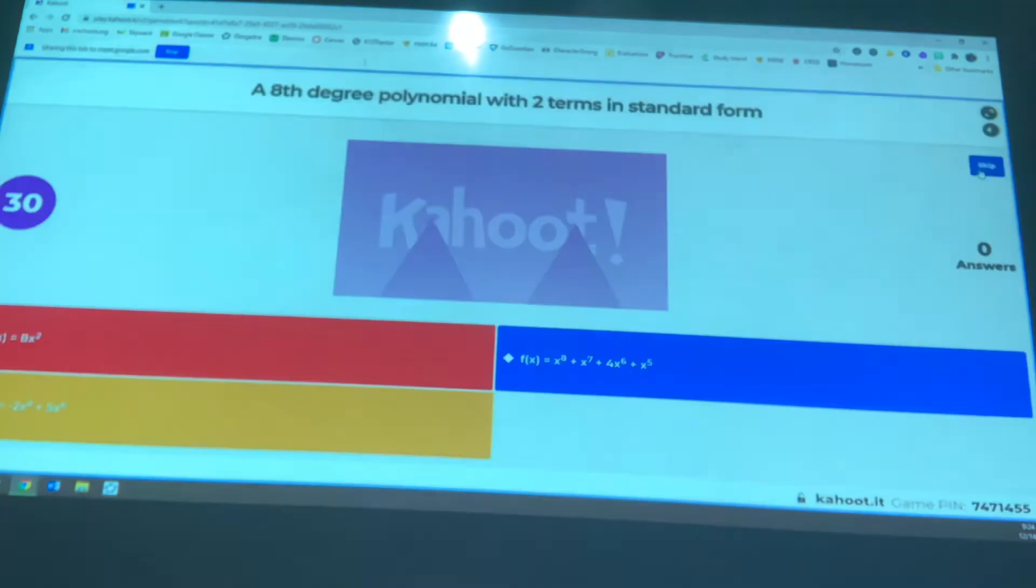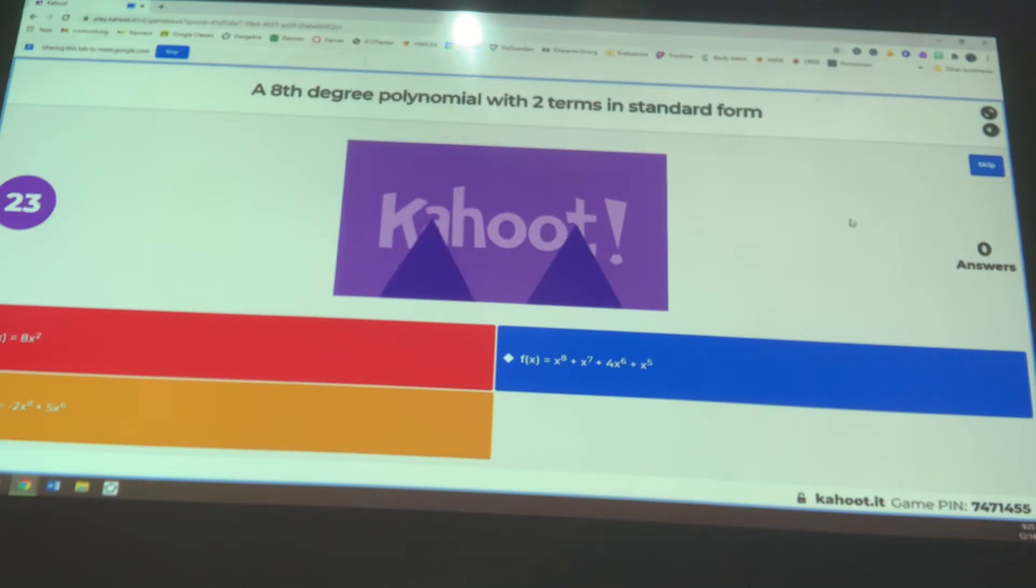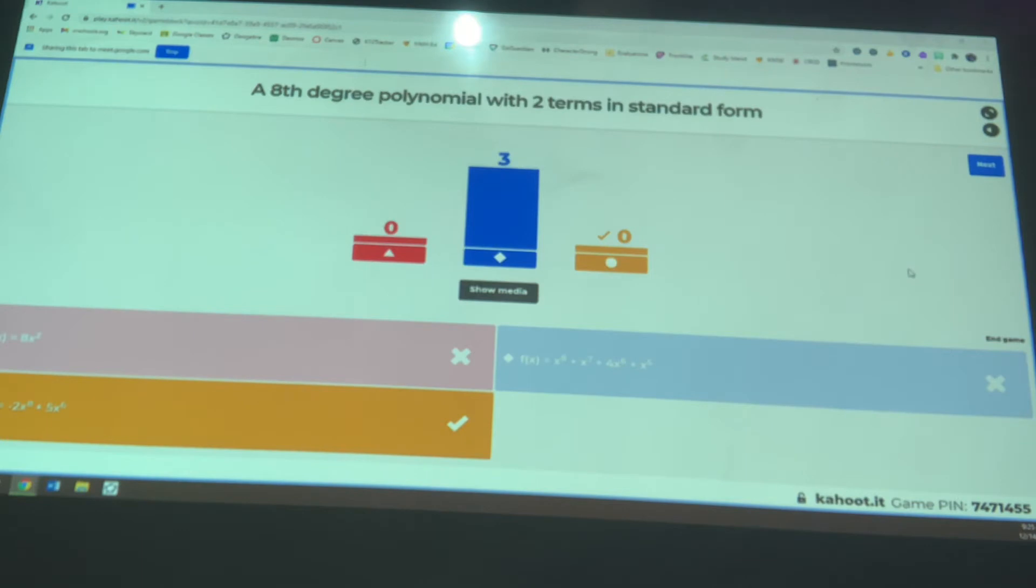Alright, what is an example of an eighth degree polynomial with two terms that is in standard form? It's kind of small. Hopefully you can see that. That's okay, Max. You can play along in the chat if you'd like. So eighth degree, highest exponent should be eight. If it has two terms, then it's only going to have two things that are being added or subtracted, right? Okay. Yeah, careful. This one, it wasn't in standard form technically, but you had one, two, three, four different terms there, right?